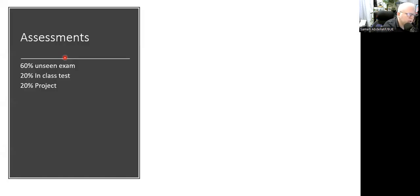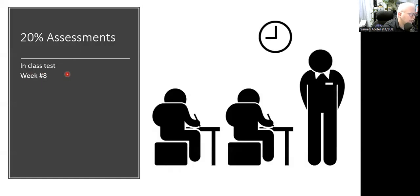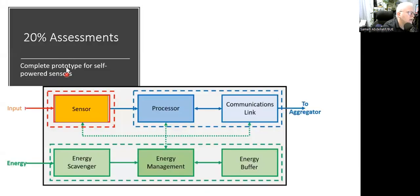Concerning the assessment and based on your bylaws, we have three components. We have unseen exam with 60% by the end of the semester. We have an in-class test with 20% and one-hour in-class test. And we have also another 20% for project. It's a group project. And the target in this project is to prototype a complete energy harvesting system.